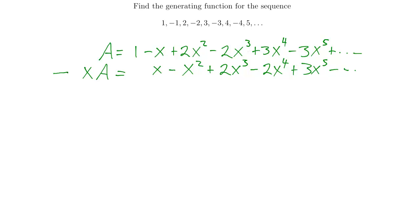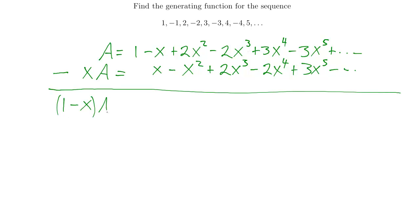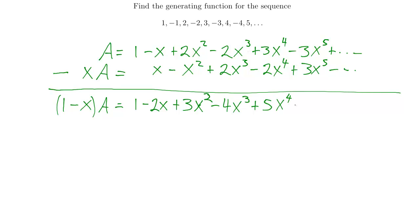I subtract the bottom line from the top line on both sides. On the left I again get (1 minus x) times A. On the right: 1 minus 0 is 1; negative x minus x is minus 2x; 2x squared minus a negative x squared is plus 3x squared; negative 2x cubed minus 2x cubed is minus 4x cubed; 3x to the 4th minus a negative x to the 4th is plus 5x to the 4th; then minus 6x to the 5th. So the coefficients are 1, negative 2, 3, negative 4, 5, negative 6, and so on.